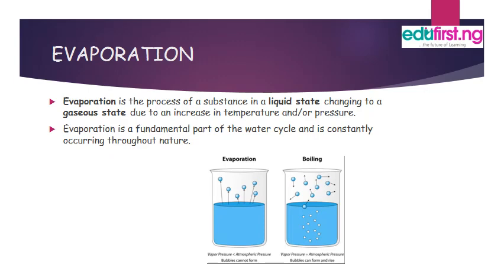Evaporation is a process of a substance in a liquid state changing to a gaseous state due to an increase in temperature and pressure. Evaporation is a fundamental part of the water cycle and is constantly occurring throughout nature. So if you increase the temperature of water, for instance, and the water gets to 100 degrees Celsius — that is its boiling point — if the temperature of that water exceeds 100 degrees Celsius, the water molecules begin to evaporate. They begin to escape and change state from the liquid state to a gaseous state.